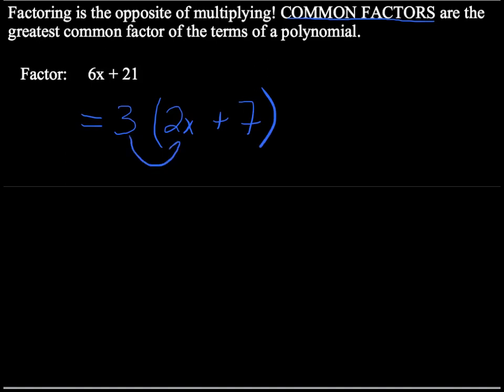Because 3 times 2x will give me 6x, and 3 times 7 will give me 21. So that's a common factor of 3.